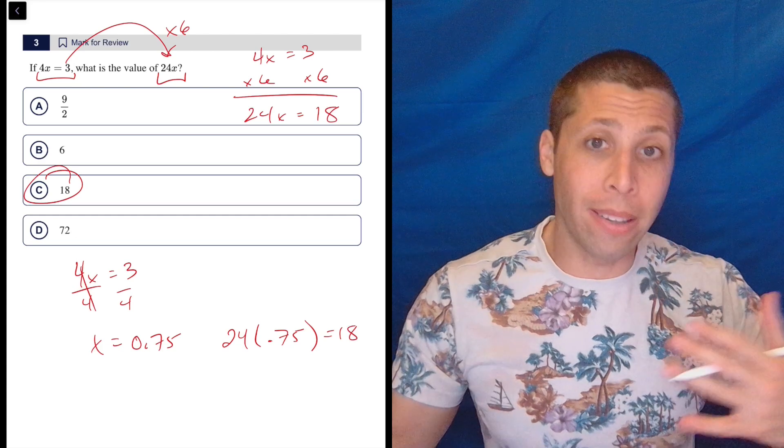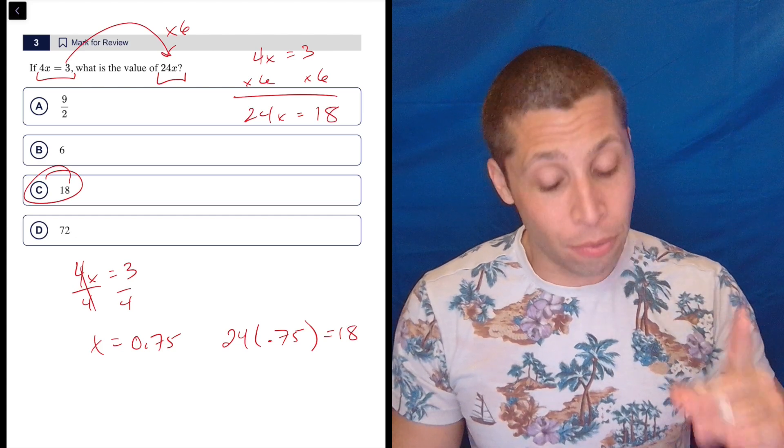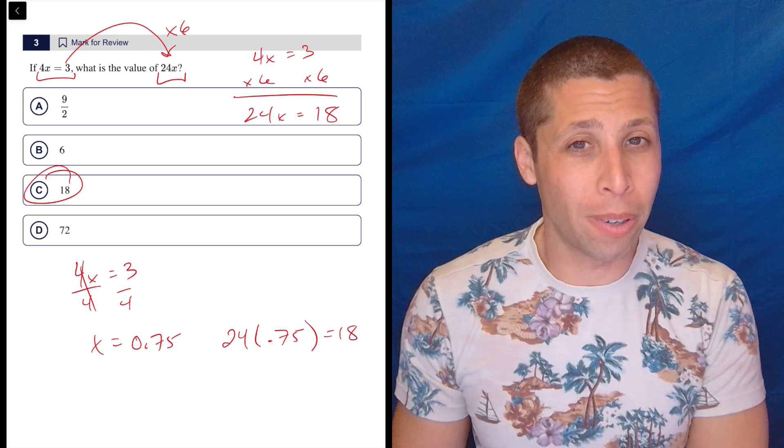I don't think one way or the other really makes a difference on a question like this in terms of time. But I do think that if you don't see that multiplied by 6 thing that I showed you originally, you're going to have some trouble when these questions get harder.